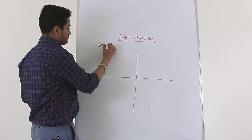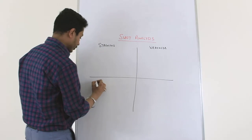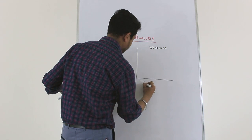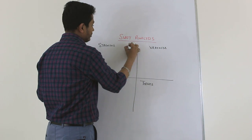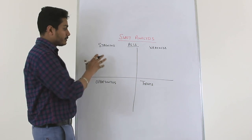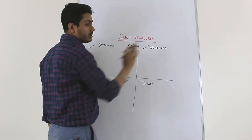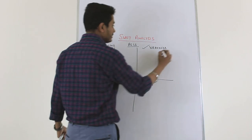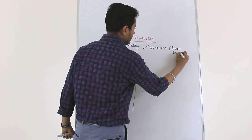Strengths and weaknesses are the as-is elements of any organization — they are current and relevant only to the organization. They are not influenced by the market or competitors. Strengths represent an organization's unique selling proposition, which earns them business in the short run. Weaknesses are generally the risks relevant to an organization from a short-term to medium-term perspective.